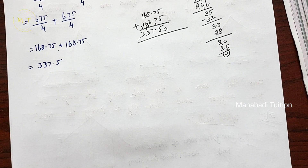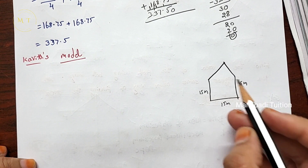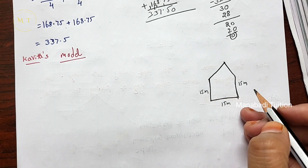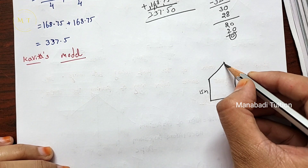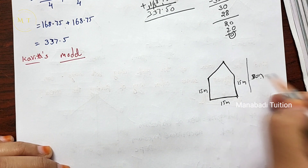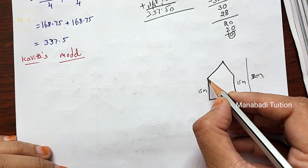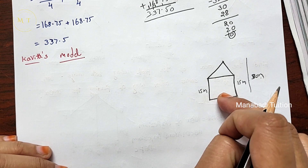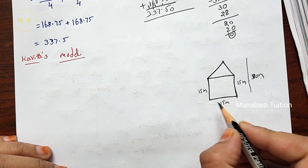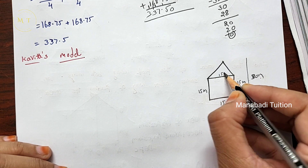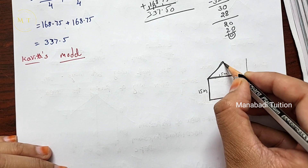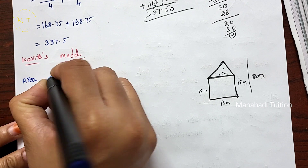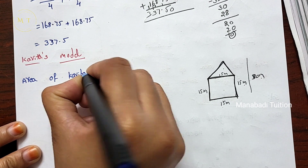Next, Kavitha's model. We will find out Kavitha's method. You have a diagram — observe the first diagram: all sides are 15 meters. The key side length gives 30 meters. In Kavitha's model, you cut it into a square and one triangle. So you have a square with sides 15 meters and a triangle here — square and triangle.